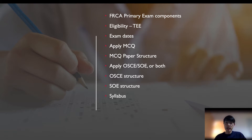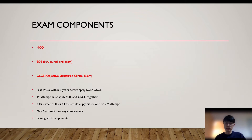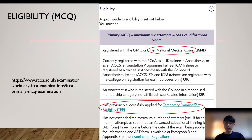I will talk about the exam components, eligibility to apply, exam dates, how to apply, the MCQ, and the exam paper structure. FRCA primary is divided into three main components: the MCQ, SOE, and OSCE. You have to pass the MCQ before you can apply the SOE and OSCE. Your MCQ will be valid for three years. For the first attempt, you must apply the SOE and OSCE together; if you fail either one, you can apply that component on your second attempt.